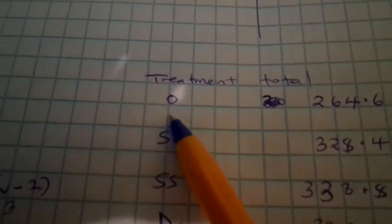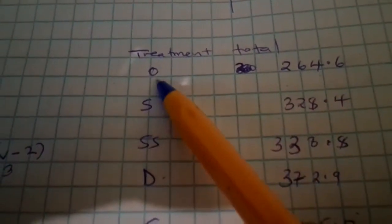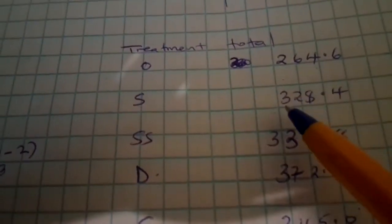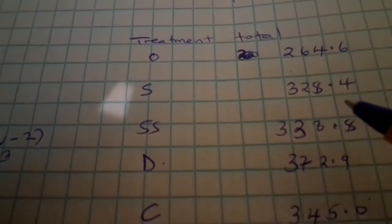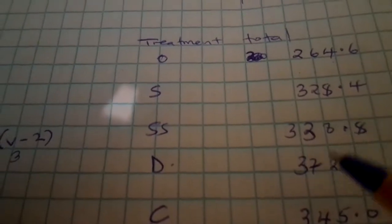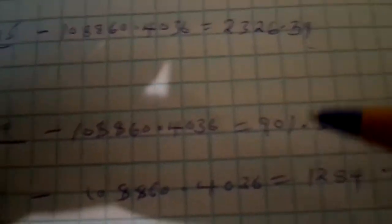For the treatment sum of squares, we square each treatment total — squaring 364.6, 328.6, 348.6, 372.9, and 345 — and add them all together. We then divide by the number of treatments, which is five, and subtract the correction factor. This gives us the treatment sum of squares.